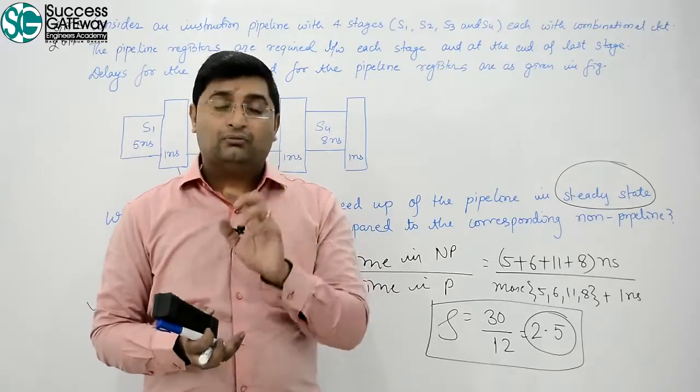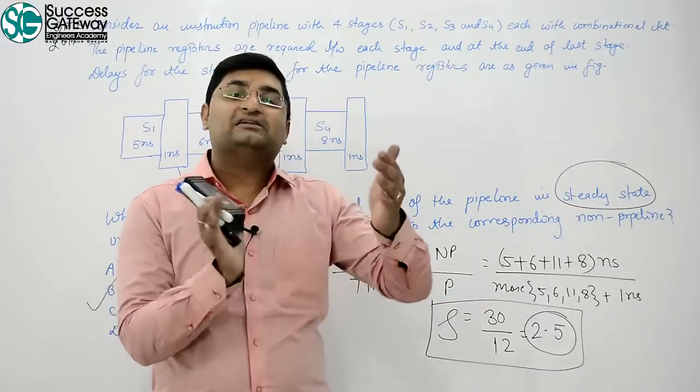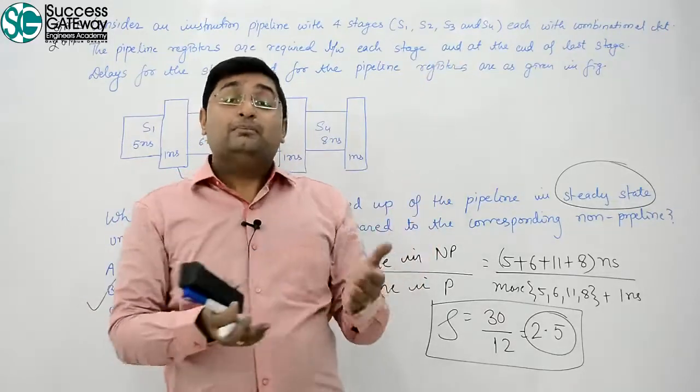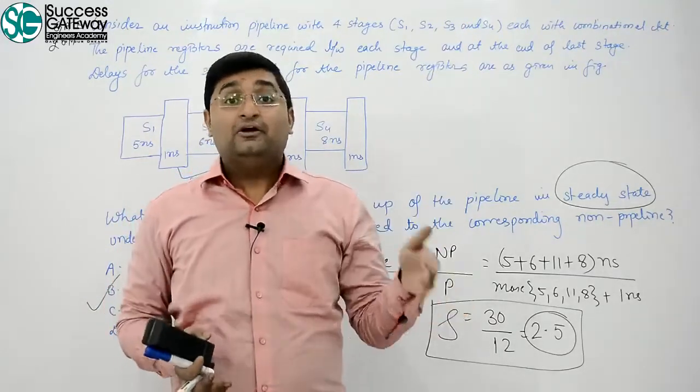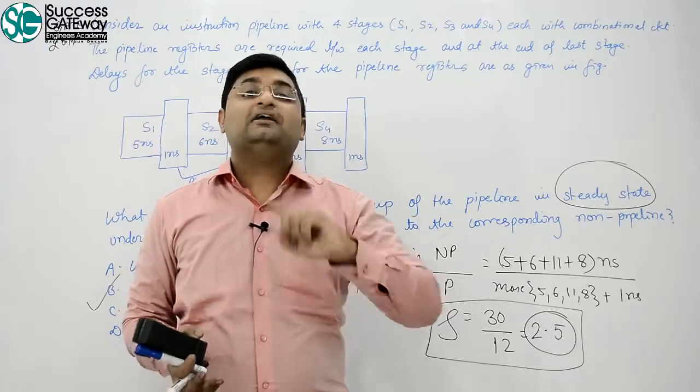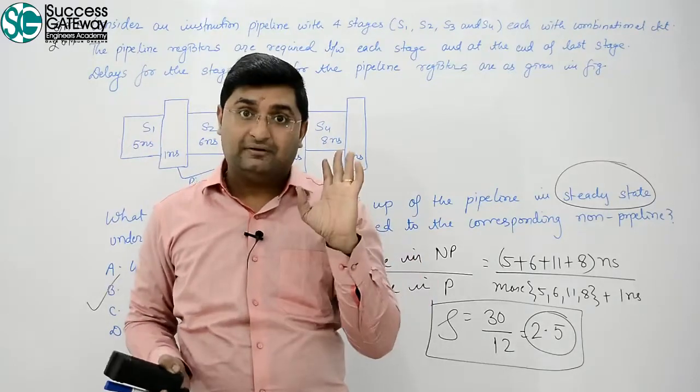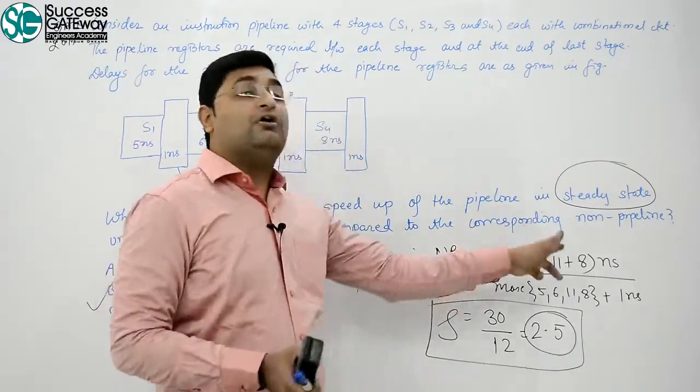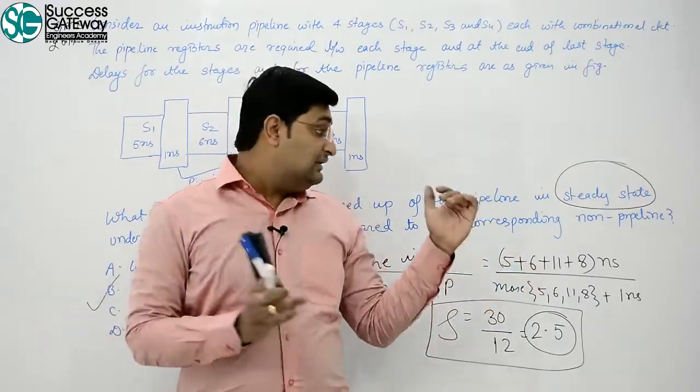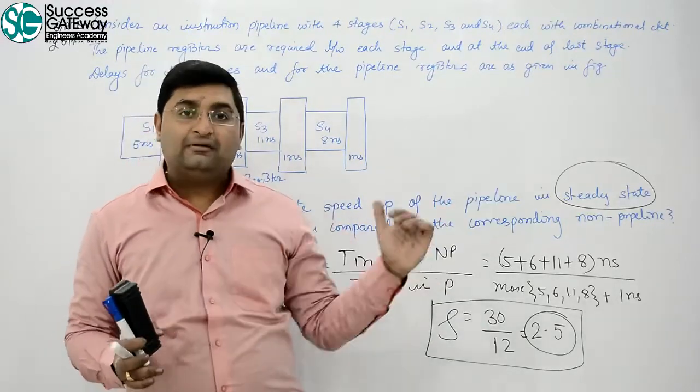Got the point? Now, when do we get the benefit of pipelining? When the number of instructions is high. When the number of instructions becomes very large, what is the average CPI that comes out to be? Then what do we use? Maximum stage delay, got the point? Plus overhead, if any. Clear?